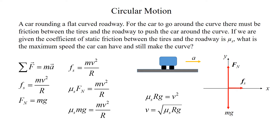We apply Newton's second law — the sum of the forces equals ma. We have acceleration in the horizontal x-direction: mv²/r. There is no movement in the vertical direction, so the normal force upward equals the weight downward. This gives us F_s = mv²/r and F_n = mg.